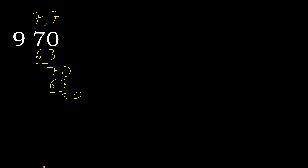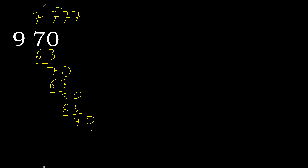Repeat. Therefore it repeats — here 7 repeats. Therefore 70 divided by 9 is here: after the decimal point, 7 repeating.